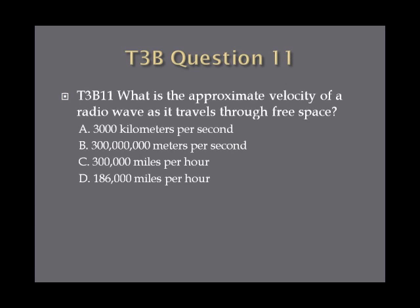Question 11. What is the approximate velocity of a radio wave as it travels through free space? A, 3,000 kilometers per second. B, 300 million meters per second. C, 300,000 miles per hour. Or D, 186,000 miles per hour.